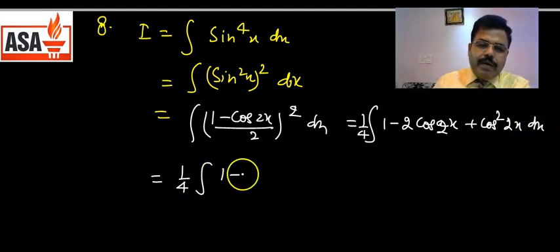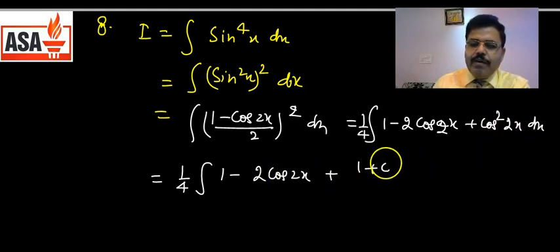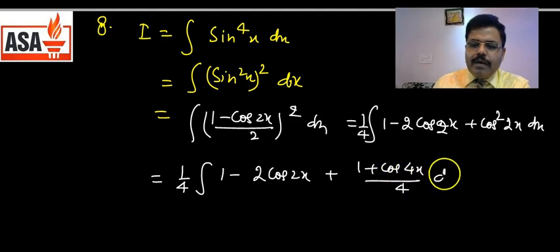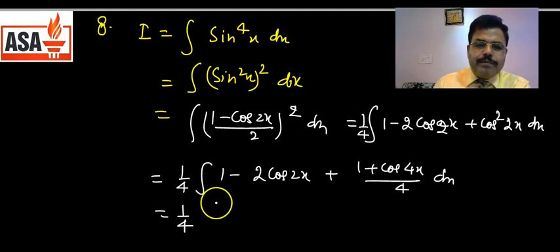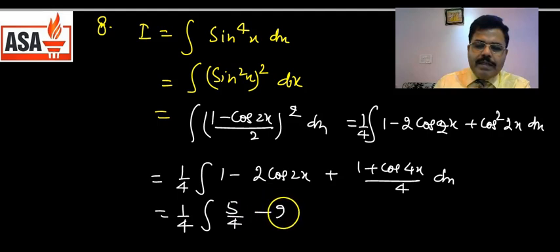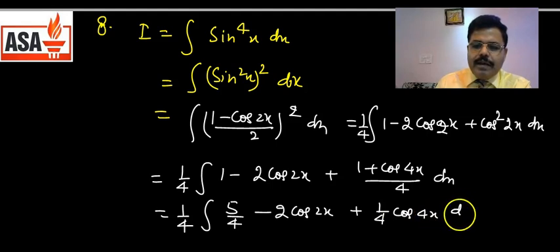Simplifying: 1/4 × [1 + 1/2 − 2cos2x + (1/4)cos4x] = 1/4 × [3/2 − 2cos2x + (1/4)cos4x]। Wait — constant: 1 + 1/2 = 3/2, but we can write it as 5/4 after combining? Integrand = 1/4 × [5/4 − 2cos2x + (1/4)cos4x] dx। तो यह हो जाएगा 5/4 − 2cos2x + 1/4 cos4x।